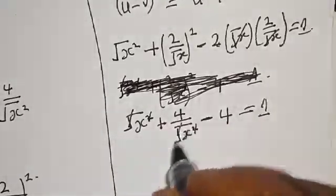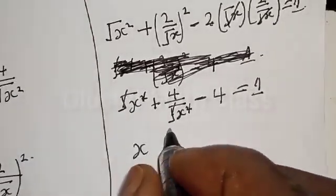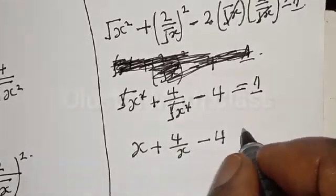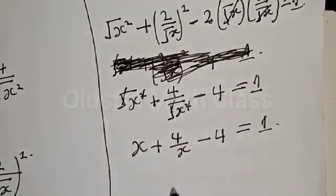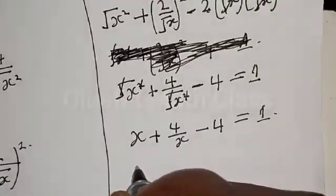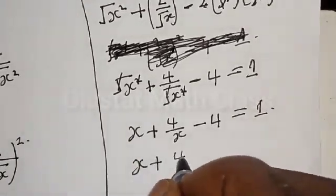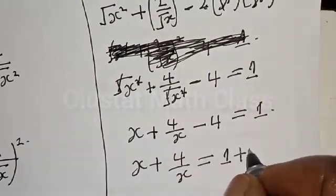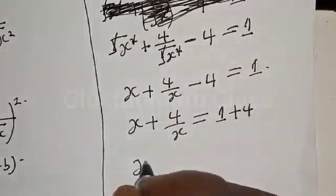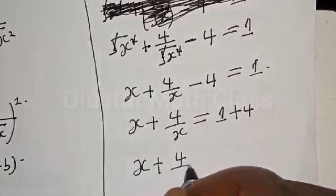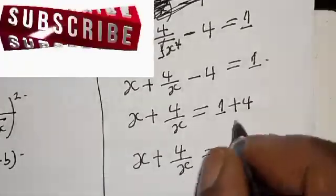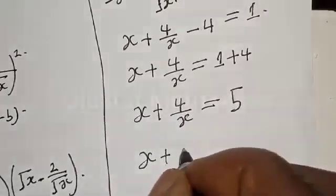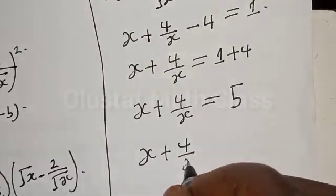After expanding and simplifying, the square root terms cancel, giving us s plus 4 divided by s minus 4 equals 1. Therefore s plus 4 divided by s equals 1 plus 4, which equals 5.